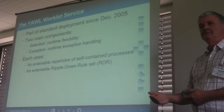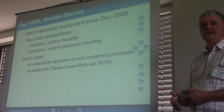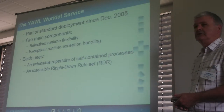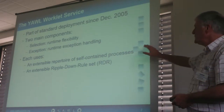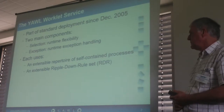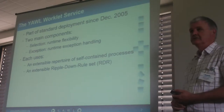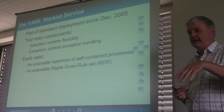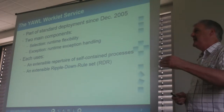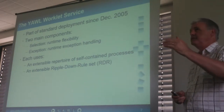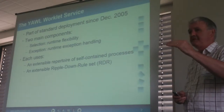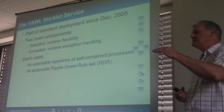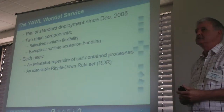Exception handling actions include suspending the task, doing some compensation, restarting the task, canceling the case, and so on. Each of them uses an extensible set of Ripple Down Rules. Ripple Down Rules are a set of binary rules of the form if/then/else/except — so as well as an else, there's an except clause.